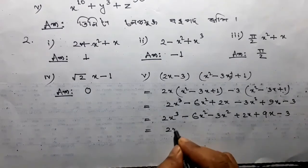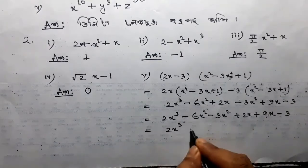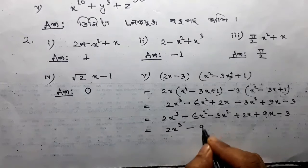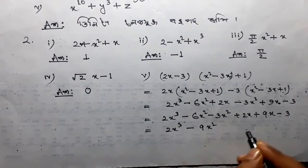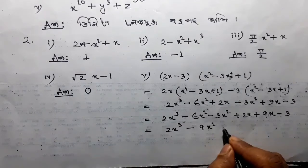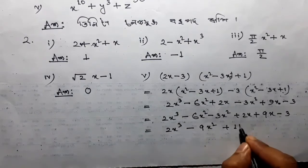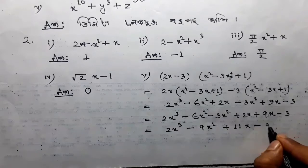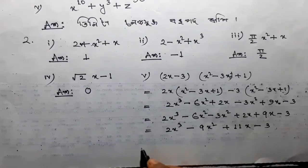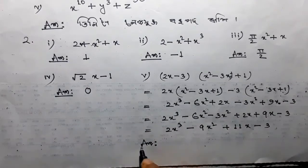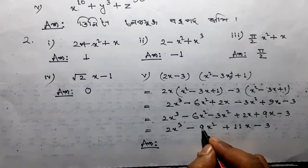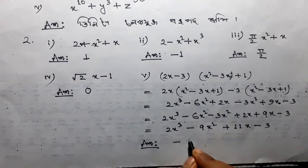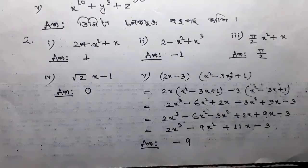2x cube minus 9x squared plus 11x minus 3. So what do you write? x squared and hog. So x squared and hog keep minus of 9.